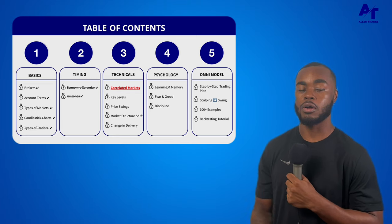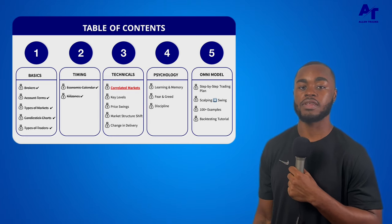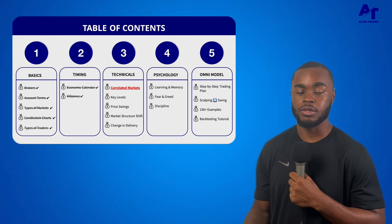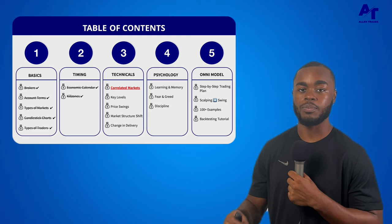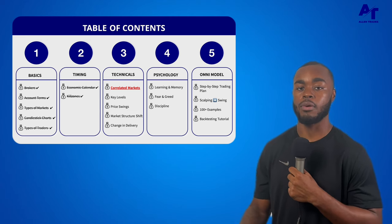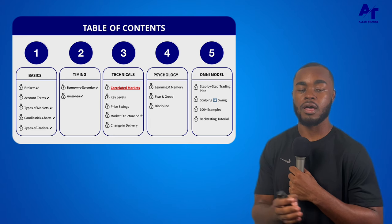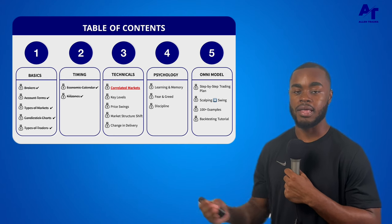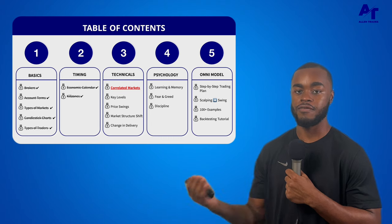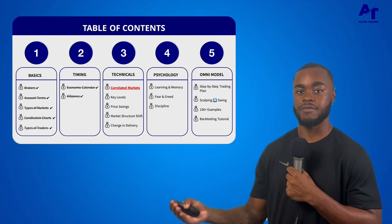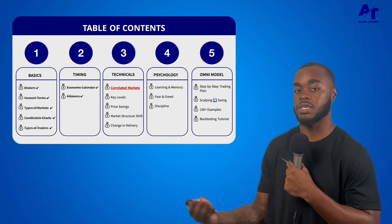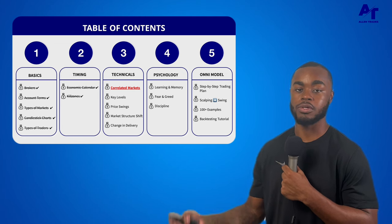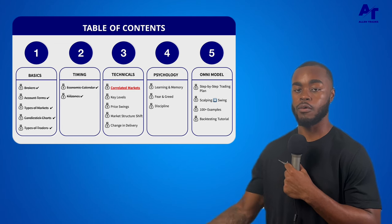Now we are on section three, where we're going to cover the technicals of price action and learn some of the key signatures that tend to repeat over and over again. Remember, these markets are delivered by an algorithm, by an AI system, and it follows very specific signatures and patterns over and over again.